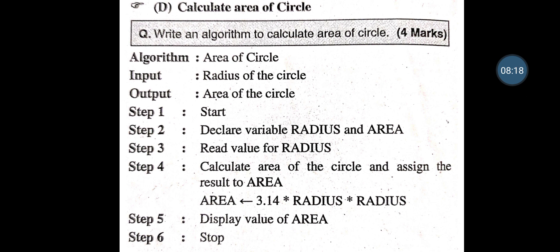Calculate the Area of a Circle. Formula is Pi multiplied by Radius squared. Input is Radius; output is Area of Circle. Step 1: Start. Step 2: Declare variables Radius and Area. Step 3: Read the value for Radius. Step 4: Calculate Area = 3.14 * Radius * Radius. Step 5: Display the value of Area, then Stop.